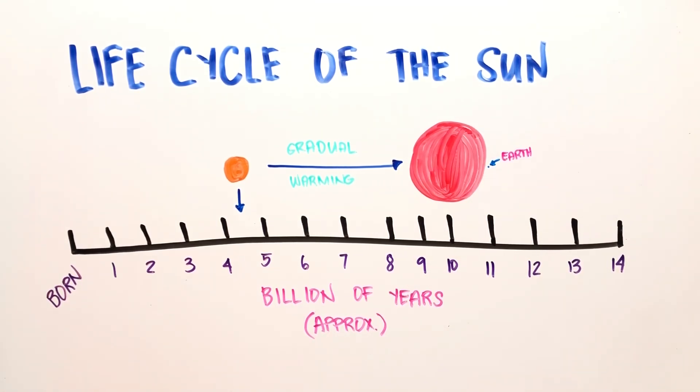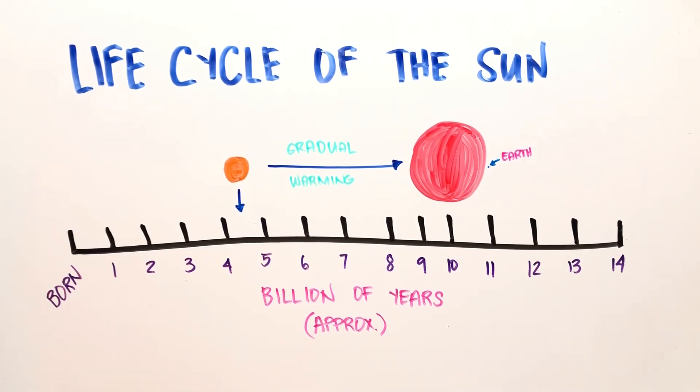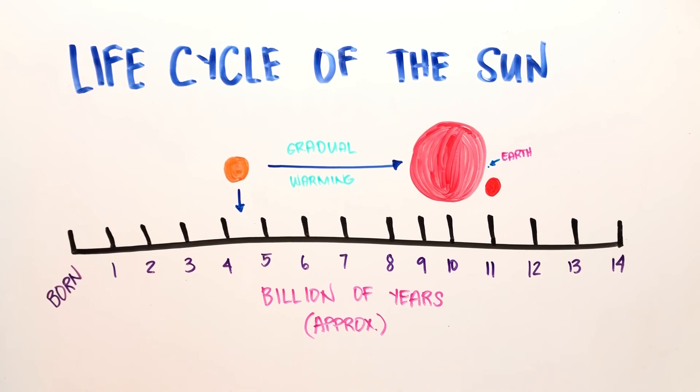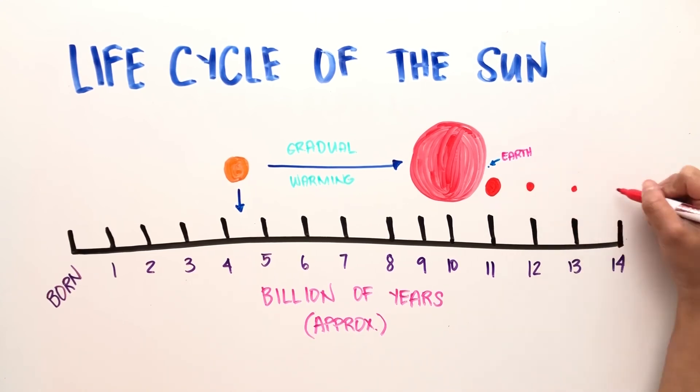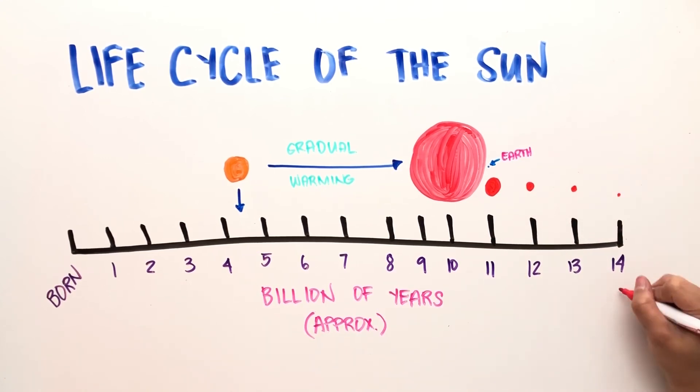So the next time you look up at the sky and see the brightness of the Sun, or feel its warmth on your skin, keep in mind that this magnificent, powerful ball of light will eventually come to its end. Perhaps by then, we'll be watching it come to the end of its life on another planet in a different solar system.